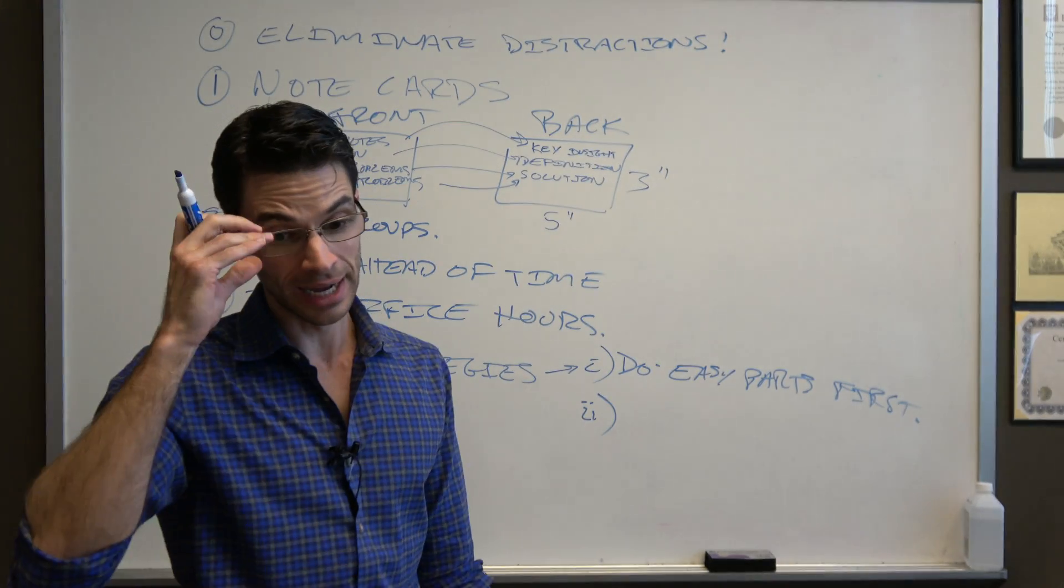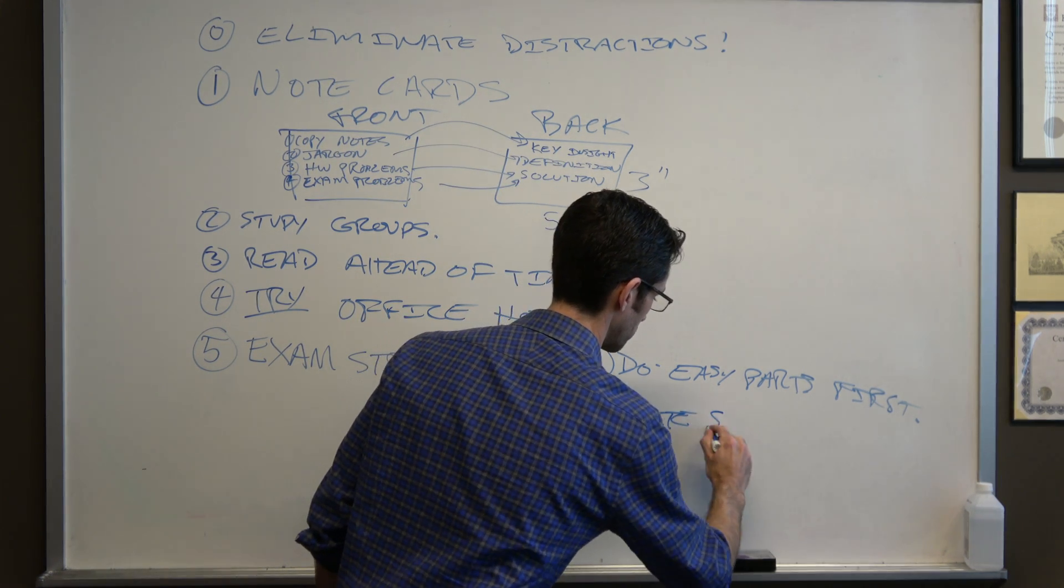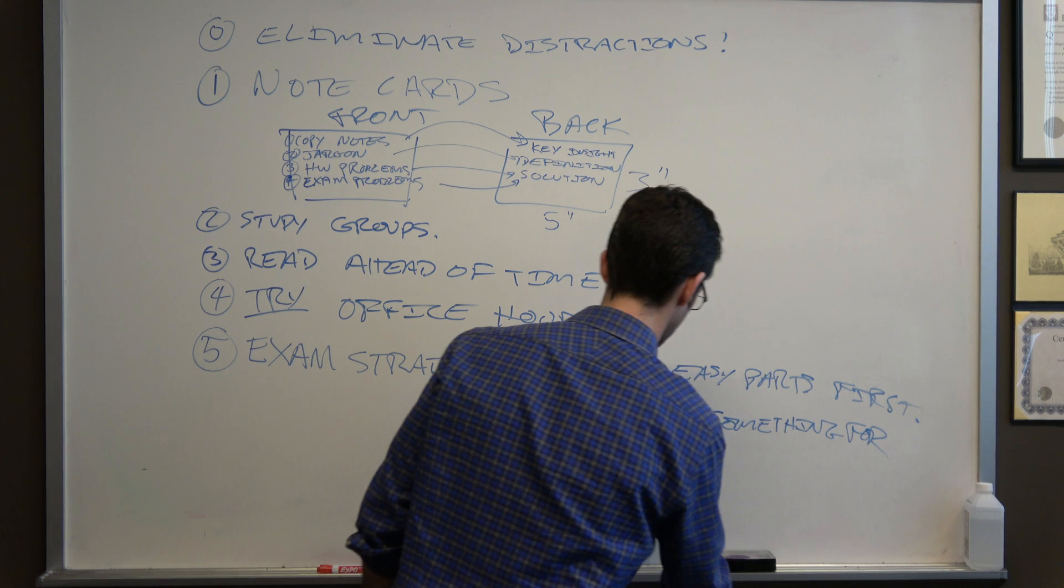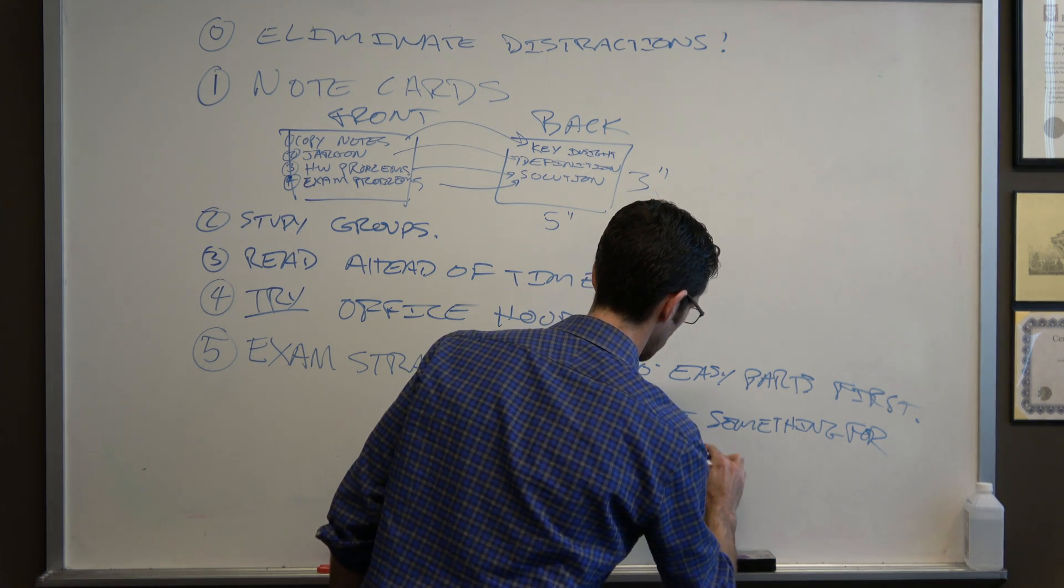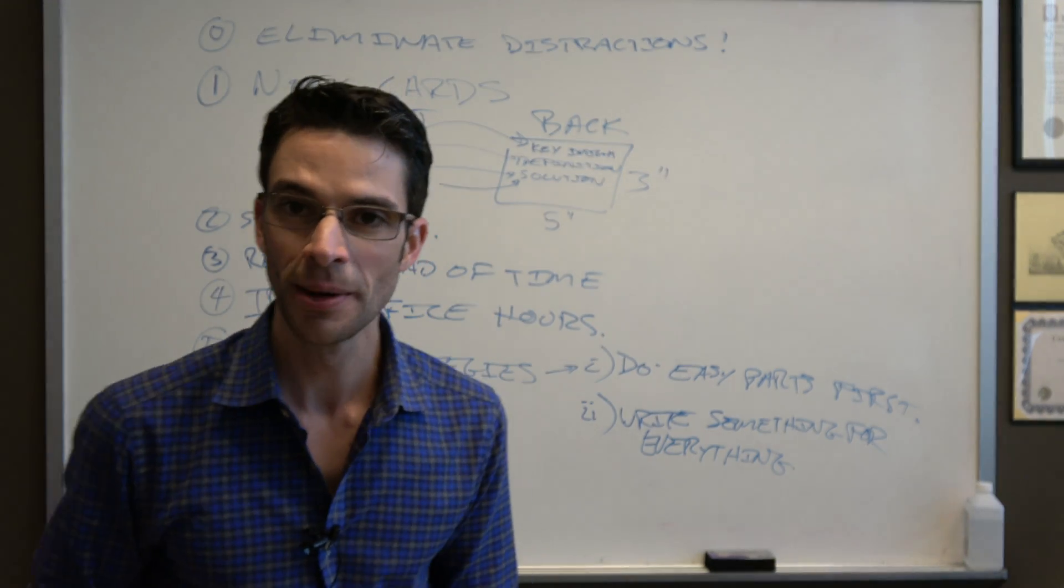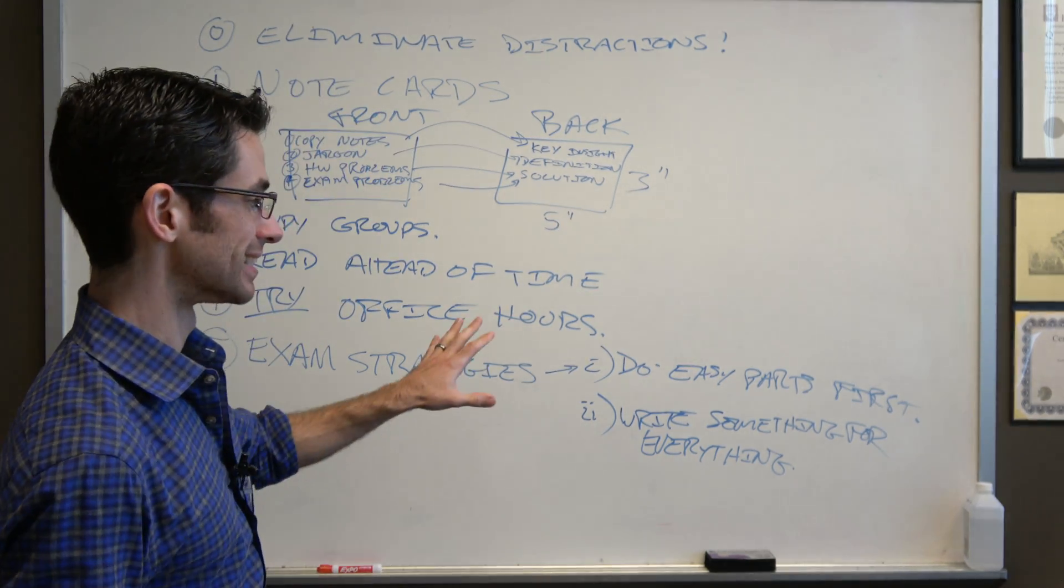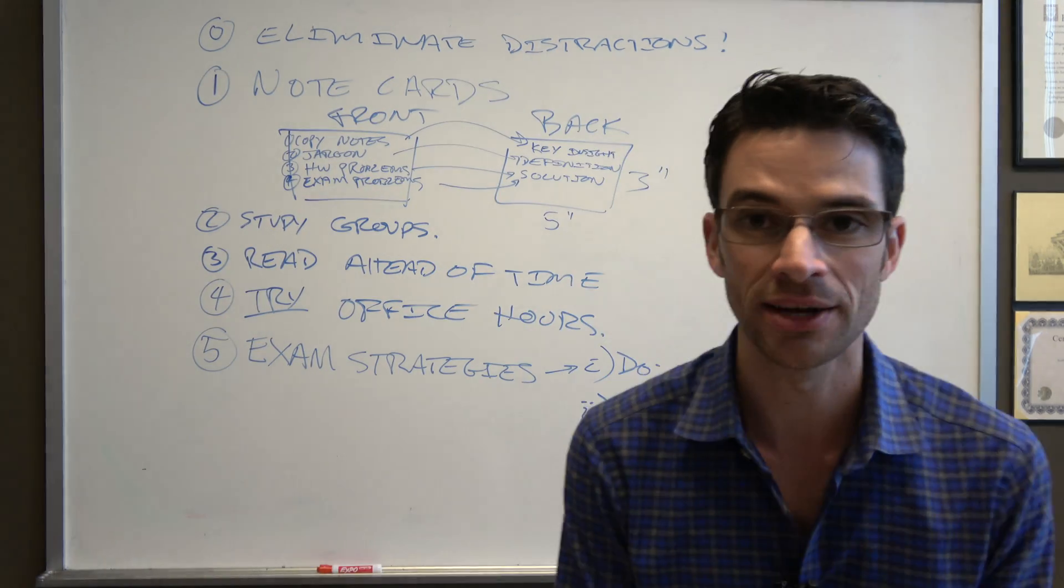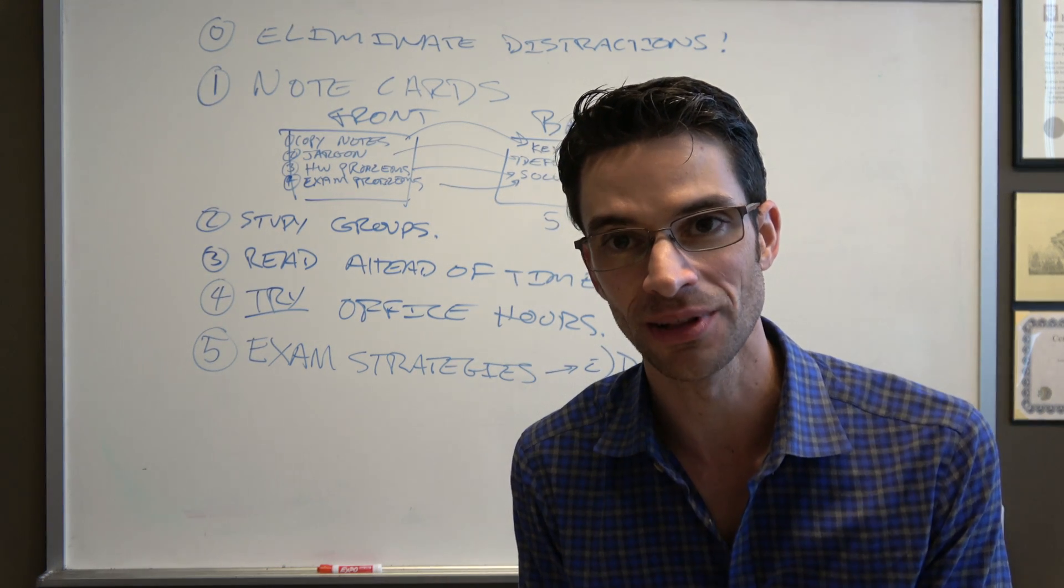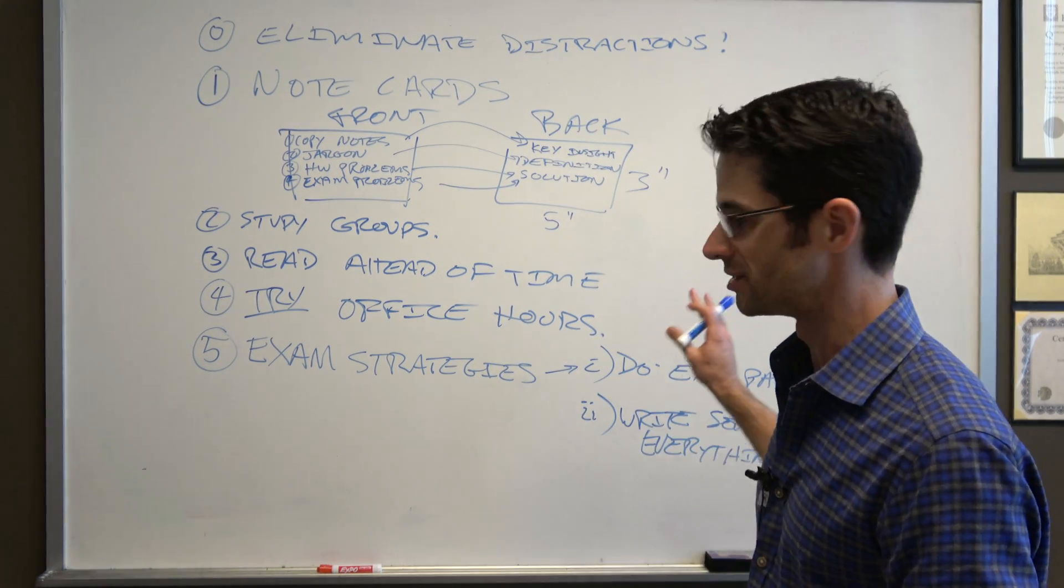And number two is to write something for everything. So writing something for everything is equivalent to maximizing your partial credit. And chances are, unless you leave it blank or are completely off base, the professor or more likely the TA will give you partial credit. So leave nothing blank. Do the easy parts first.